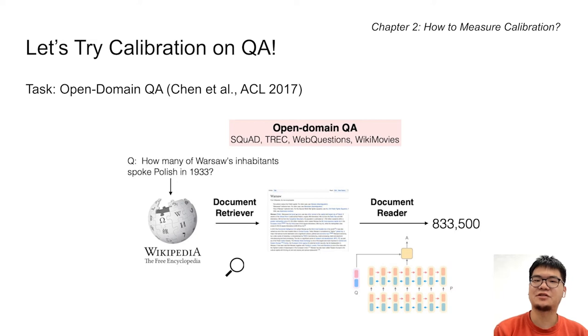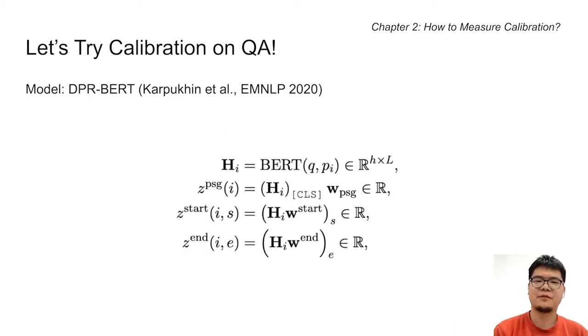Now let's evaluate calibration on some actual model. We will focus on open domain question answering, since it is a practical task with many real-world applications such as search engines and digital assistants. We will use a retriever reader pipeline. In particular, we use DPR as the retriever and BERT as the reader.